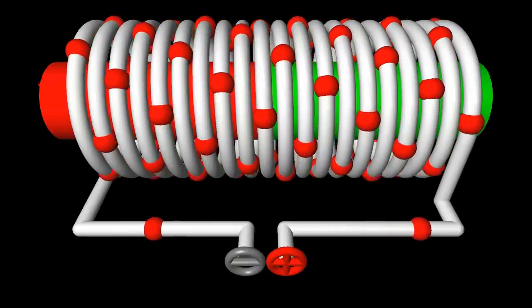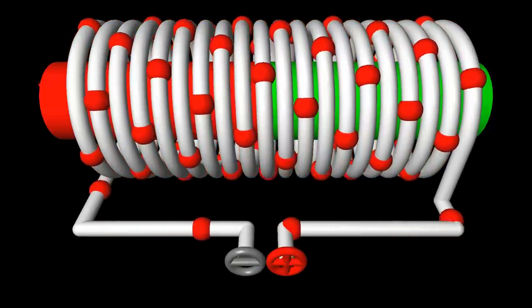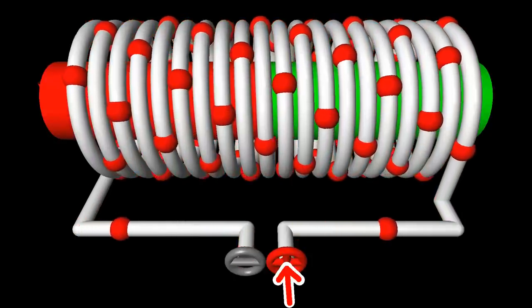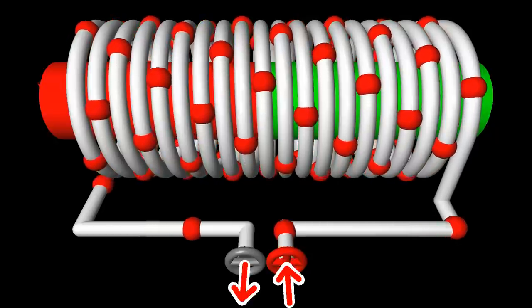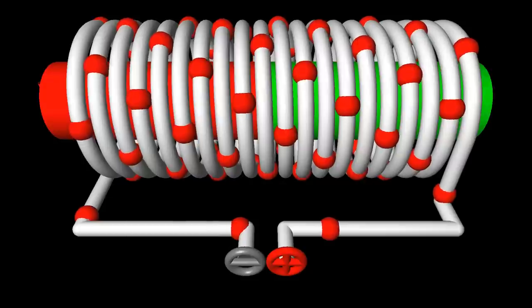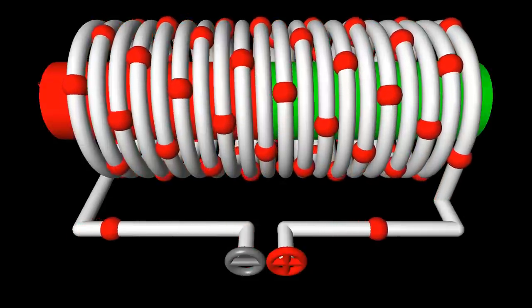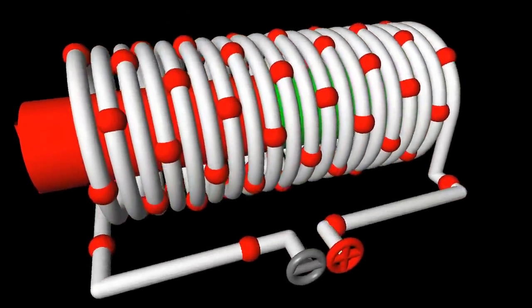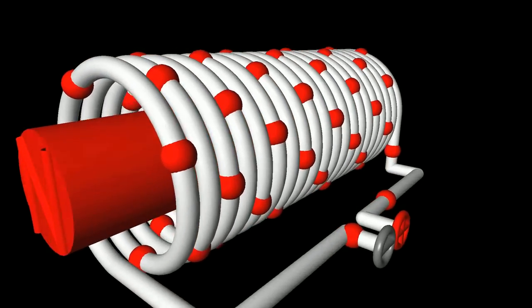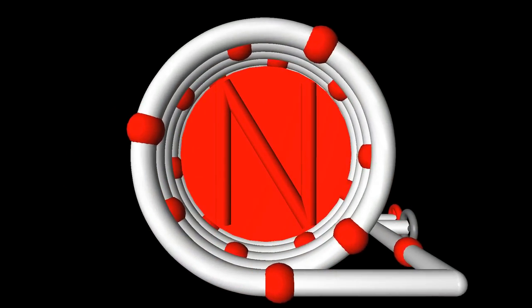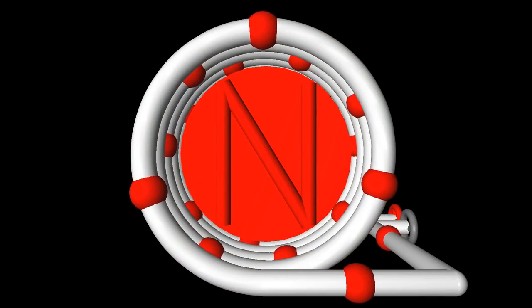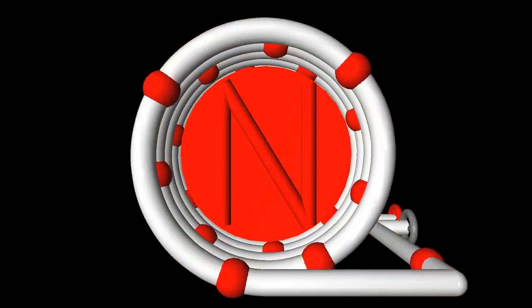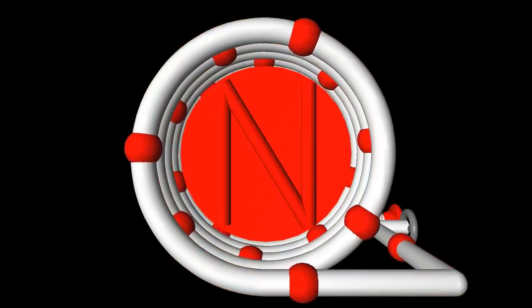If the positive terminal of the voltage source is on the right of the coil, positive charges are entering the wire at that end while they are leaving the arrangement at the negative terminal on the left. While moving along the wound wire, the charges flow counterclockwise when looking towards the left side of the coil. According to definition, this is the location of the magnetic north pole.